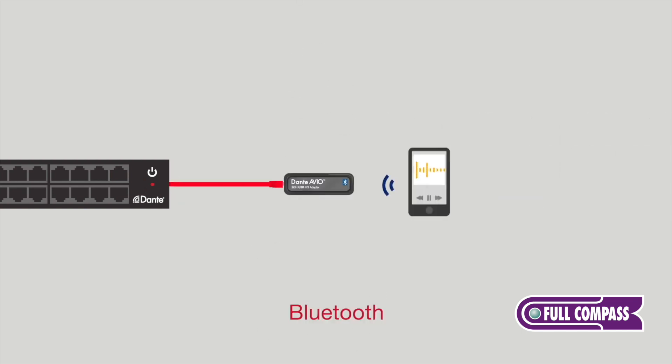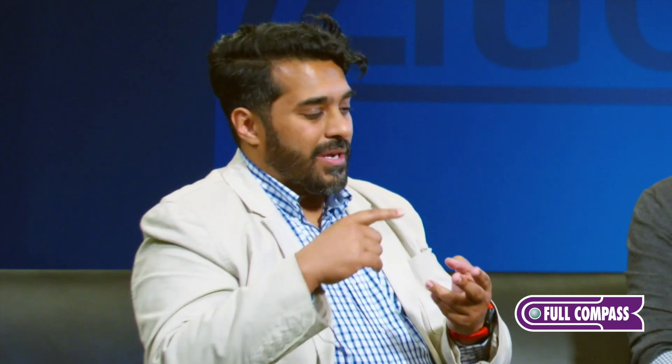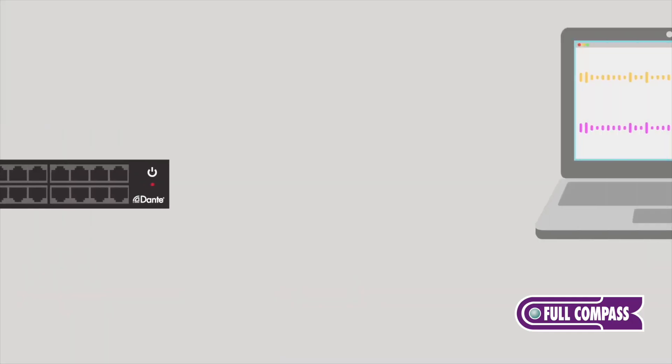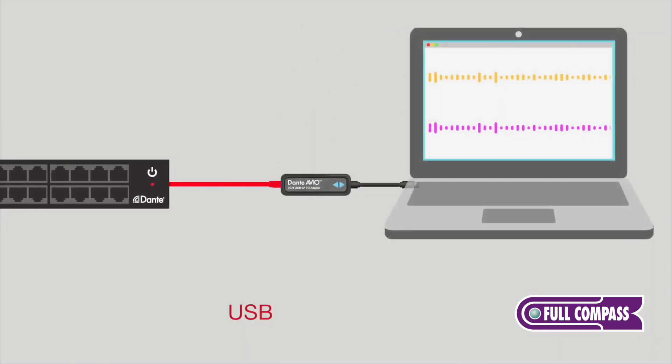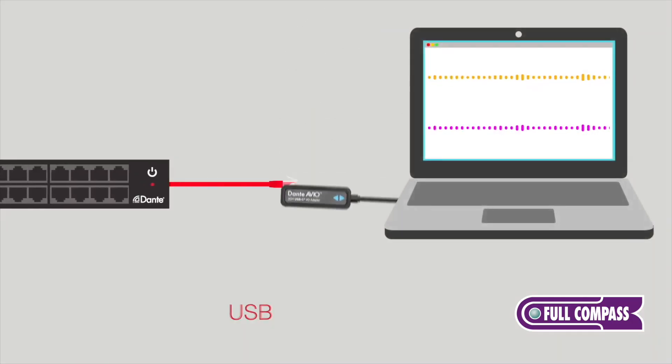How have you seen some creative usages of those Avio adapters? What Avios give you is an opportunity to bring a couple of channels onto the Dante network. It could be Bluetooth onto the Dante network, or a USB interface to your computer that you want to receive or send audio to. I also always carry a couple literally in my computer bag because I use them as troubleshooting tools.